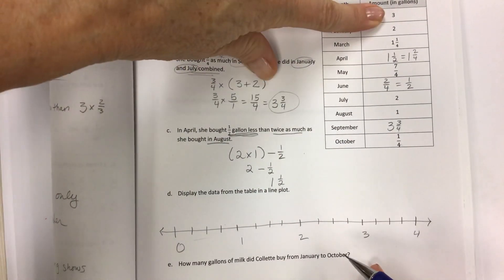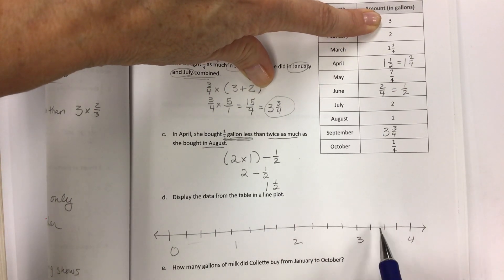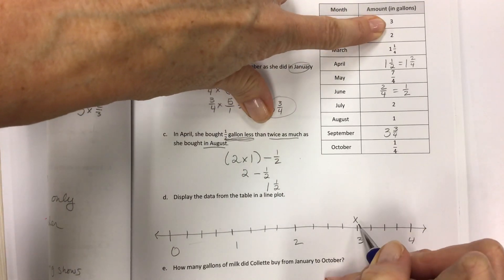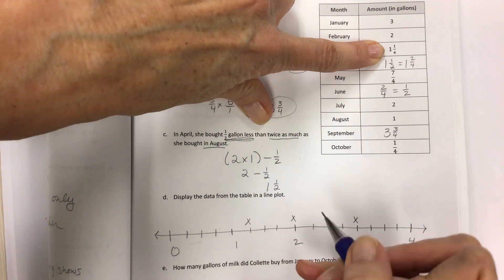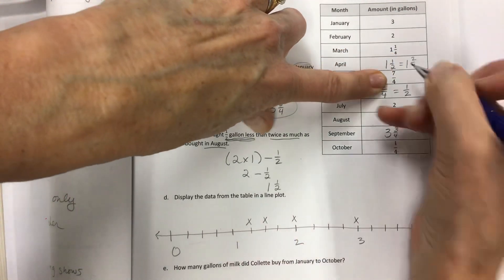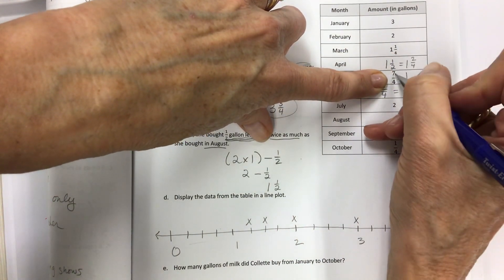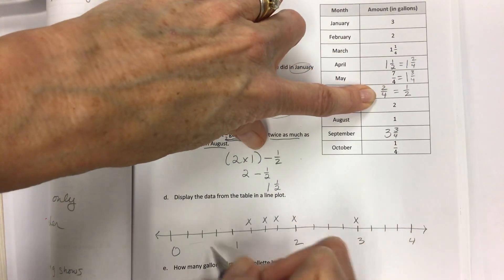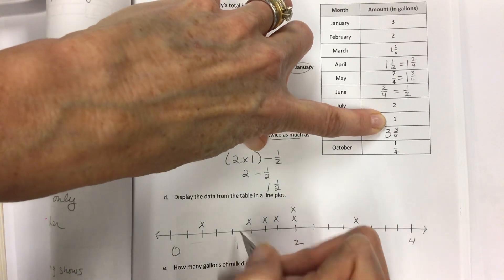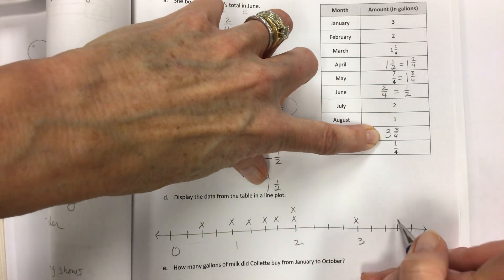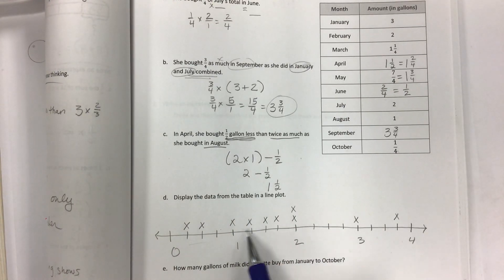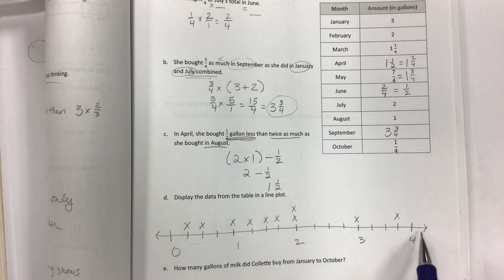Now you're going to go from the top down in the chart and put an X for each month. You go to January and put an X at three, then an X at two, then one and one fourth, then one and two fourths, then seven fourths. Four goes into seven one whole time, so we have one and three fourths. Then we have two fourths which is the one half, then two so stack it up, then one at one, three and three fourths, and then one fourth. Your data line plot should look like this.